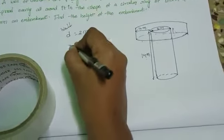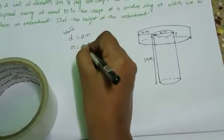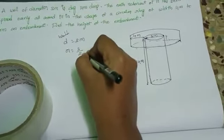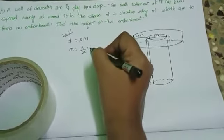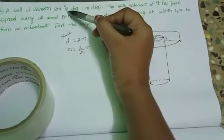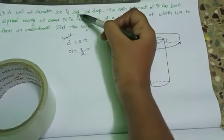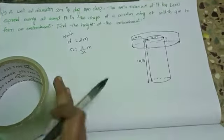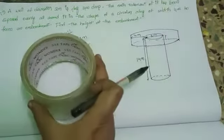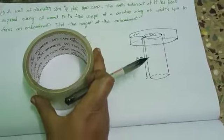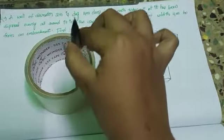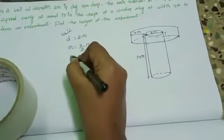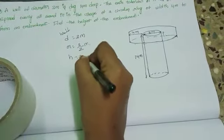What is the radius? Radius equals diameter divided by 2, so radius equals 3 by 2 meters. The well is dug 14 meters deep — deep means height of the cylinder. So cylinder height H equals 14 meters.